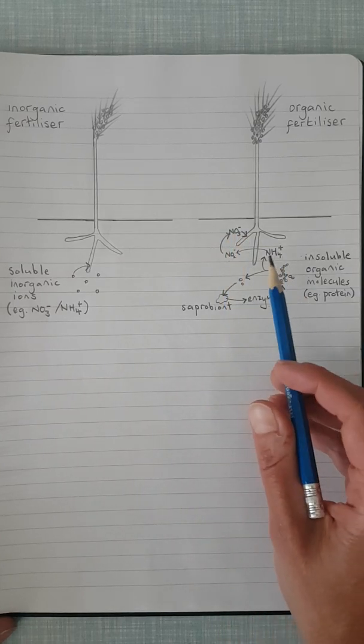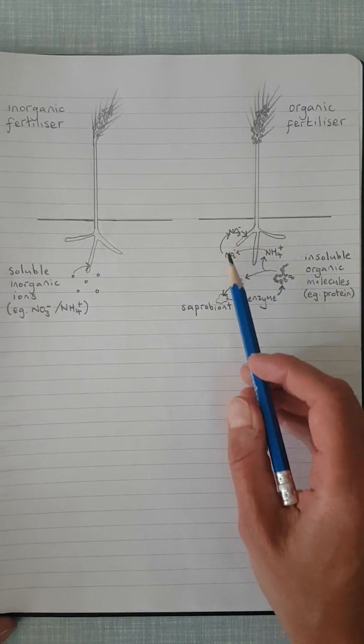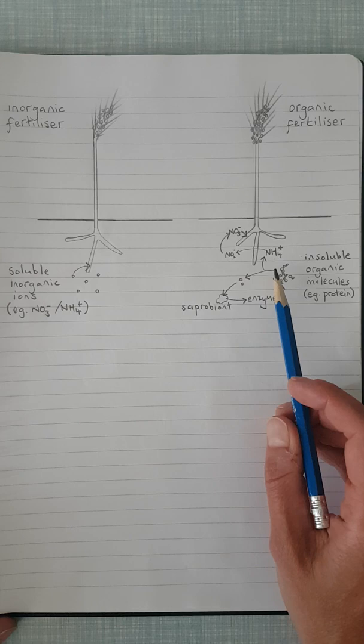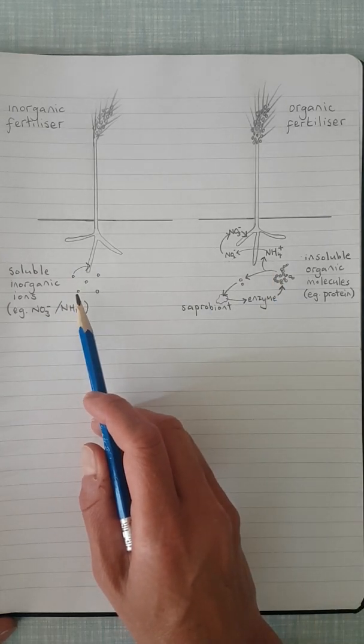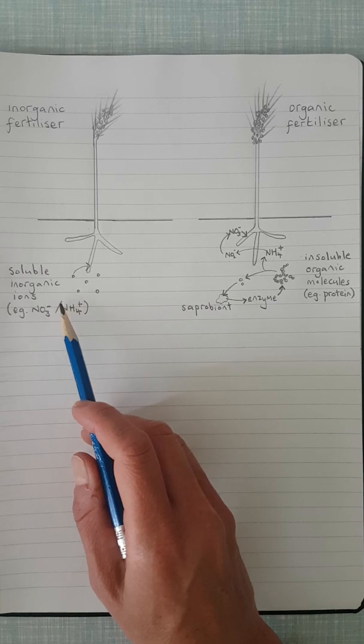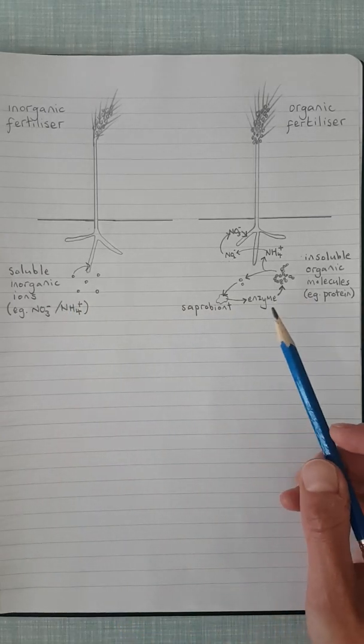So the plant is getting the same nutrients, the same ions in an organic fertilizer as it would be getting in an inorganic fertilizer. But the way it gets it is slightly different.